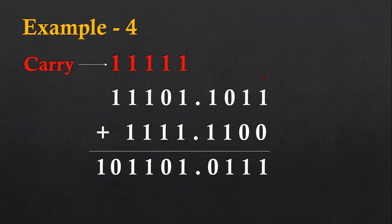One more example, which also has a fractional part. Starting from the rightmost value: 1+0 is 1. Again 1+0 is 1. 0+1 is 1. Now we have two ones, so the result is 1 and a carry of one. Then three ones — result is 1 and carry of one. Then two ones — result is 0, carry of one. Then three ones — result is 1, carry is 1. Again three ones — result is 1, carry is 1. Two ones — result is 0, and one comes from the carry. So the final result is 101101.0111.